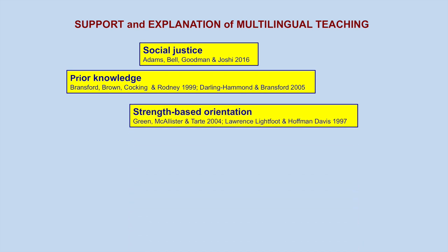Strength-based orientation comes from social work practice. It focuses on the positive, the strong, and the good in each and every learner, in contrast to the deficit view that looks at what is wrong, what is missing, and what is incomplete. The strength-based orientation looks for and builds on learners' strengths, skills, and abilities. For every child, the multilingual teacher asks: what is good here?